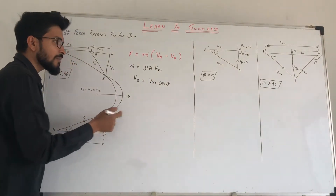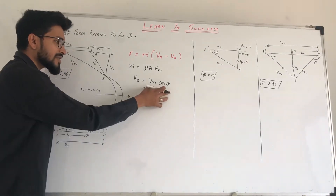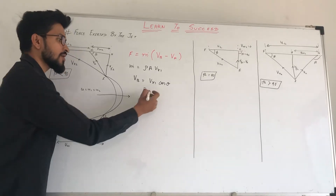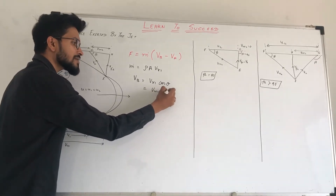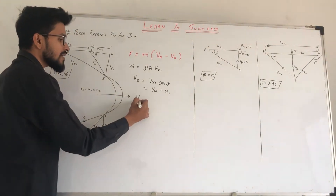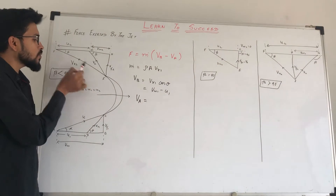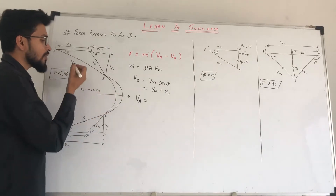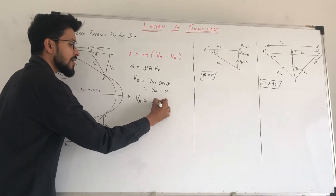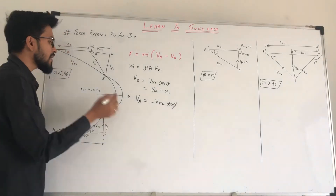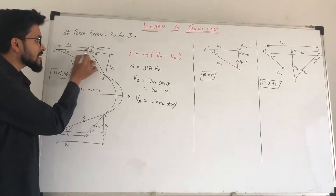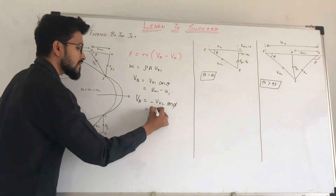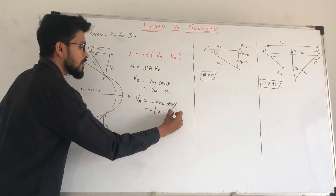The inlet angle is theta, so we use cos(theta). In terms of distance, the remaining distance will be vw1 minus u1, so VB equals vw1 minus u1. Now for the velocity after striking, that velocity is vr2. This velocity points in the negative x-direction, so it is a negative component: minus vr2·cos(phi). In terms of distance, this gives minus of (u2 plus vw2).